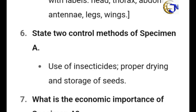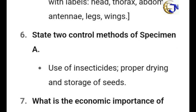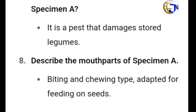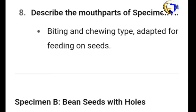State two control methods of Specimen A. How do we control the bean weevil? Use of insecticides, proper drying, and storage of seeds. Number seven: the economic importance of the bean weevil is that it is a pest that damages stored legumes. Describe the mouth part — it is a biting and chewing type, adapted for feeding on seeds.